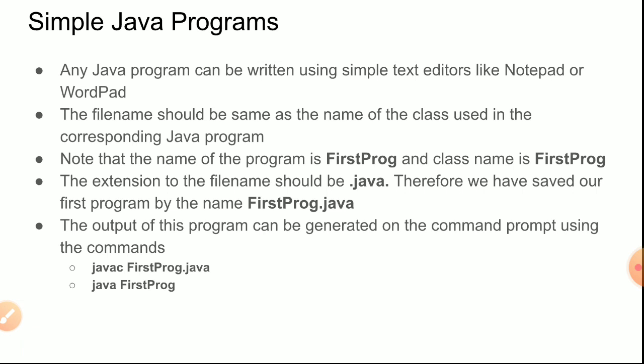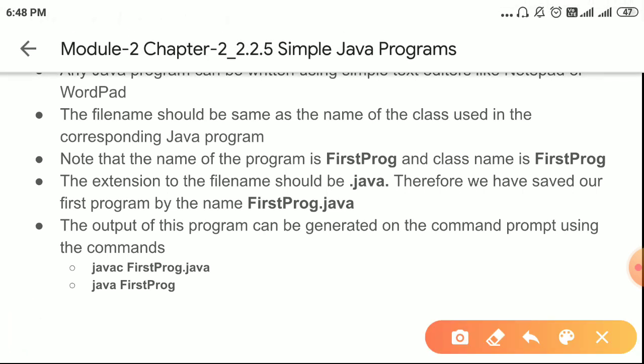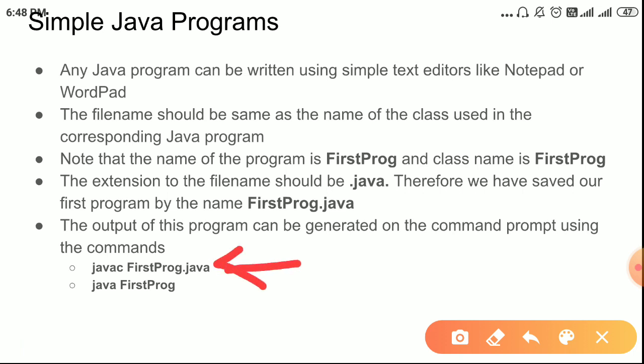The output of this program is generated on the command prompt using two commands: javac and java. 'javac' is used to compile — compile means converting the source program, which is high-level language that the user can understand, to machine code that the processor can understand. So javac converts source code to machine code. You use 'javac FirstProc.java' — the .java extension is required here.